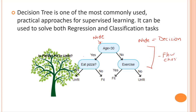From this flowchart we can predict whether a person is fit or unfit. First, we check if the age is greater than or less than 30. If the age is less than 30, we check if the person eats pizza — if yes, they are unfit; if no, they are fit. For the other case, if age is 30 or more, we check if the person is exercising: if yes, fit; if no, unfit.